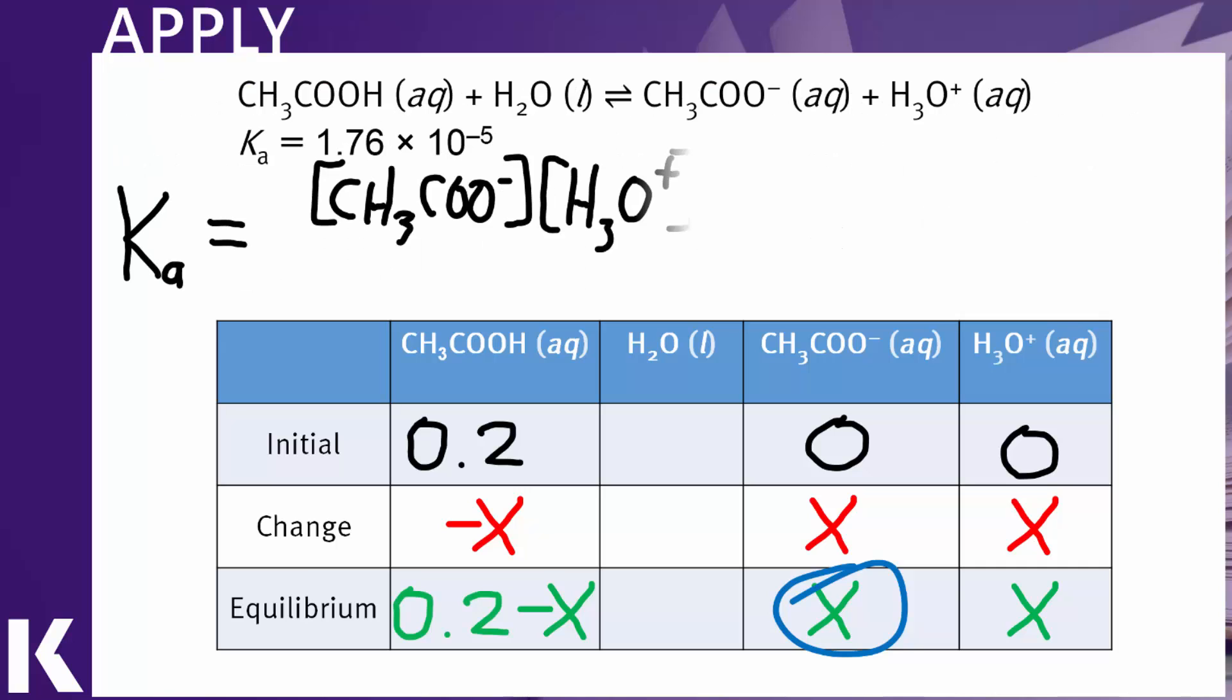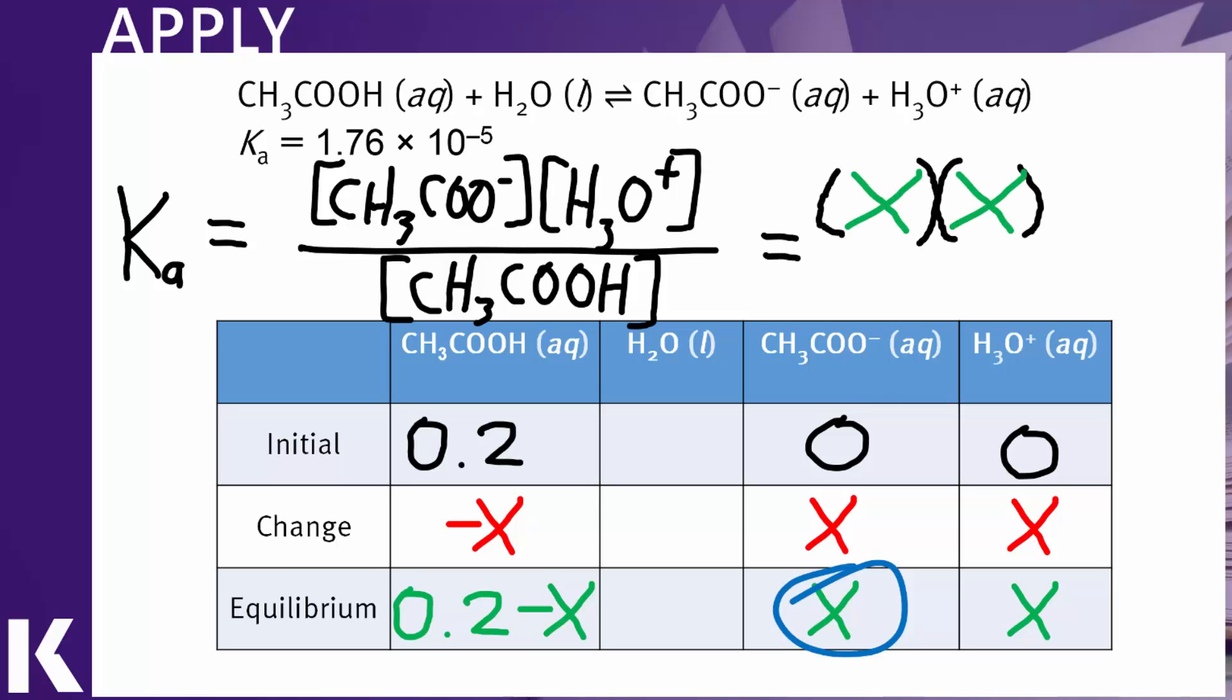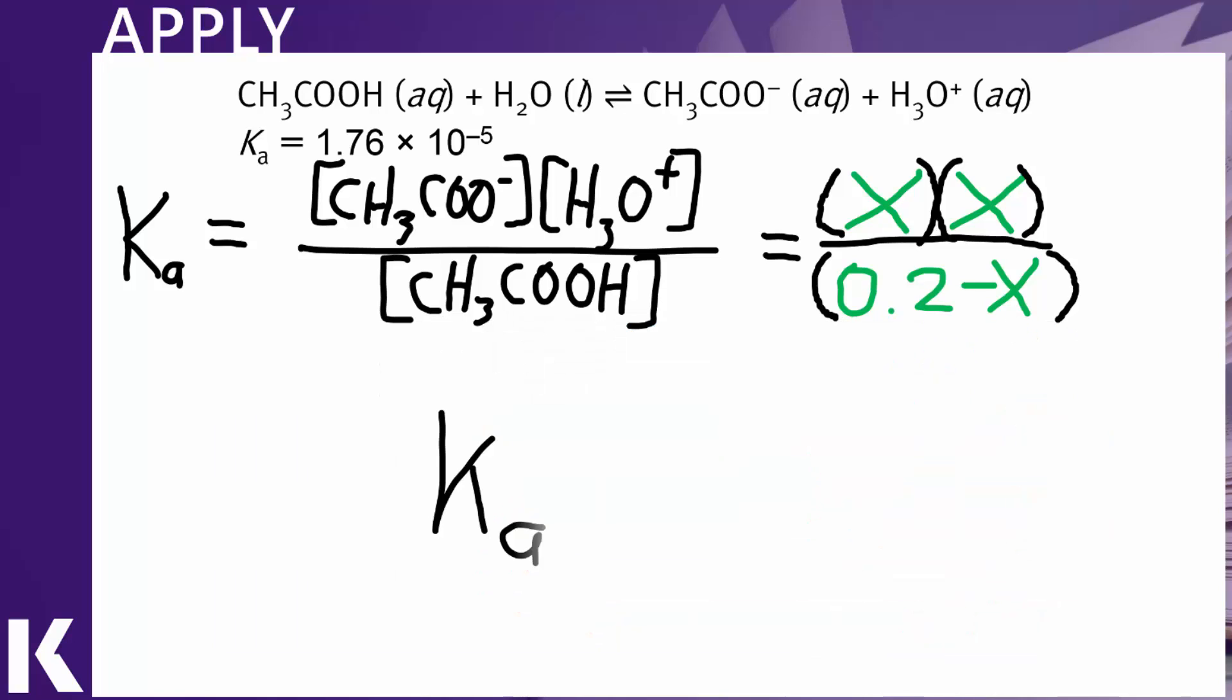So using our simplification technique then, we're trying to solve for X, which will give us the acetate ion concentration. Here we have the KA expression, and we will plug in these concentrations of products over reactants. In this case, that is X times X, or 0.2 minus X. And that all simplifies down to X squared over 0.2.